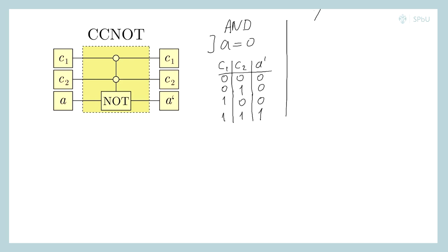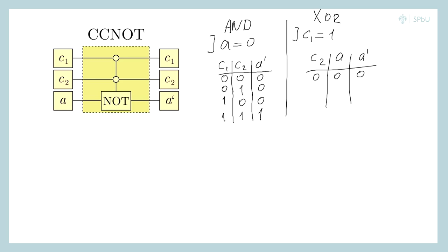Next, we consider the XOR element. Here, let bit C1 equal 1. Writing the truth table with bits C2, A, and A' at the output: if C2 equals 0 and A equals 0, nothing happens and A' equals 0; if C2 equals 0 and A equals 1, then A' equals 1; if C2 equals 1, there is a flip of bit A, so A' equals 1 when A was 0, and A' equals 0 when A was 1. This truth table matches the truth table for the XOR element.